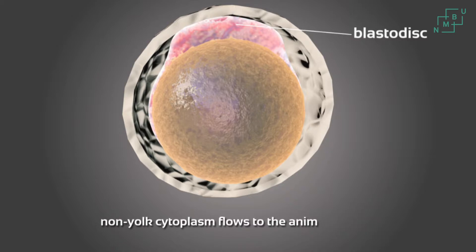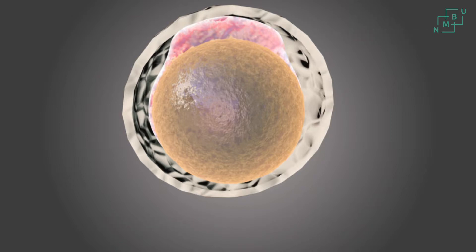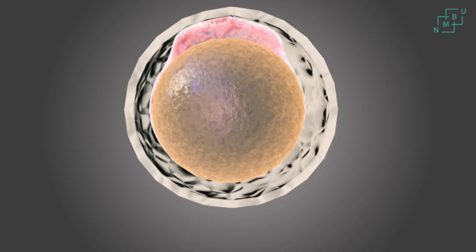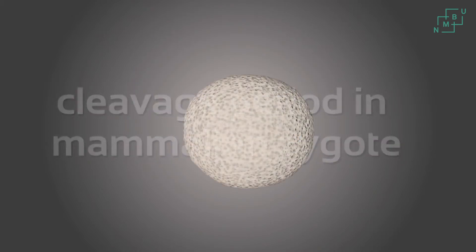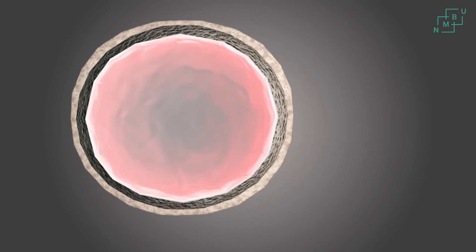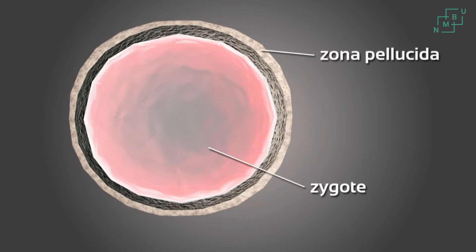Cell division begins very soon after the formation of the zygote. Remember there is a difference between cleavage in mammalian embryos and cleavage in fish embryos. Here is a short reminder of the cleavage process in mammals. In contrast to the eggs of fish, birds and reptiles, mammalian eggs contain a relatively small amount of yolk and the zygote engages in holoblastic cleavage.